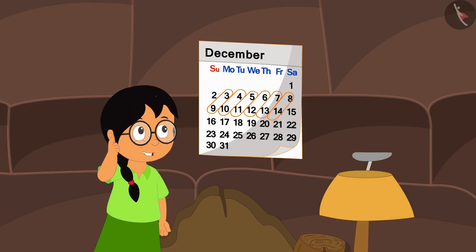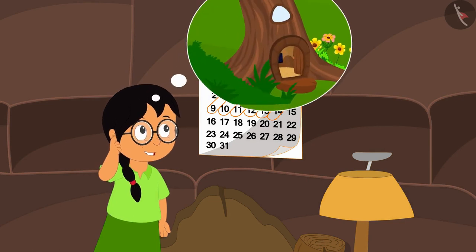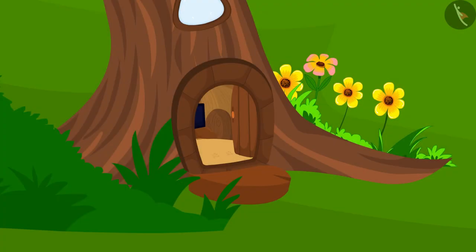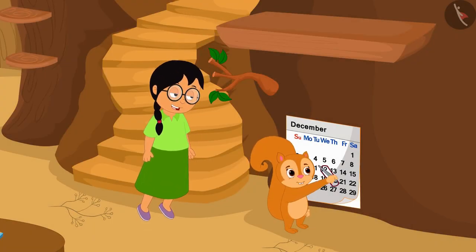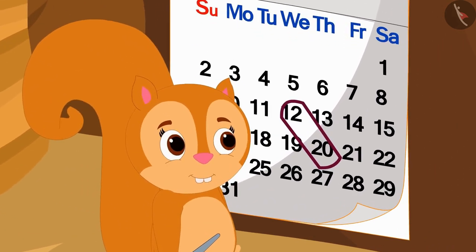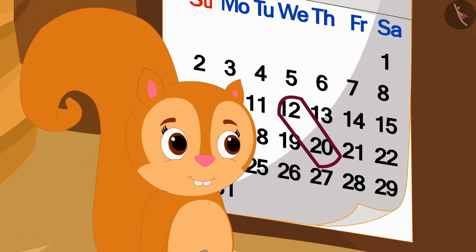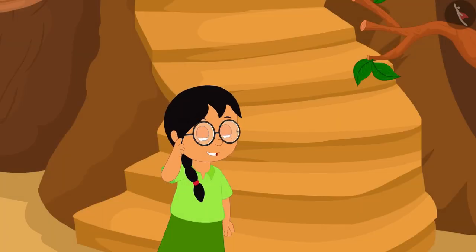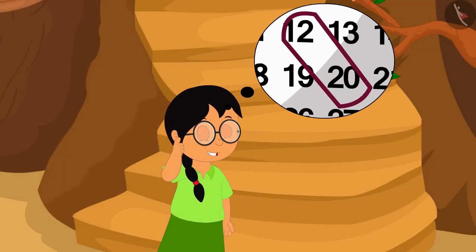Minu got very excited upon seeing this pattern. Now Minu thought that she should fly to Chanda's house and see what Chanda is doing. When she reached Chanda's house, she saw that Chanda was encircling two dates like this on her calendar. Minu started wondering if there is a pattern in these two numbers too.